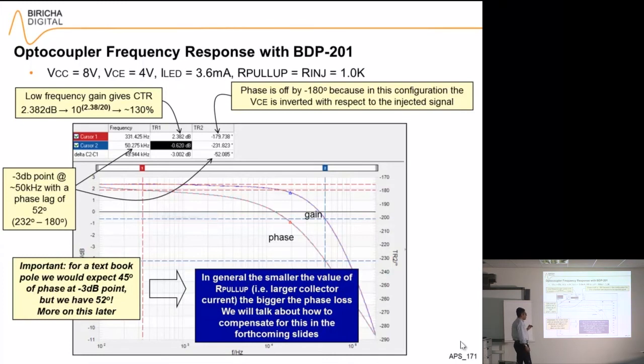In general, the smaller the value of the pull-up resistor, the larger the collector current, the bigger the phase loss. So there may be a tendency to reduce the value of the pull-up resistor in order to get better CTR, but then you lose more phase margin. So you have to find a compromise.